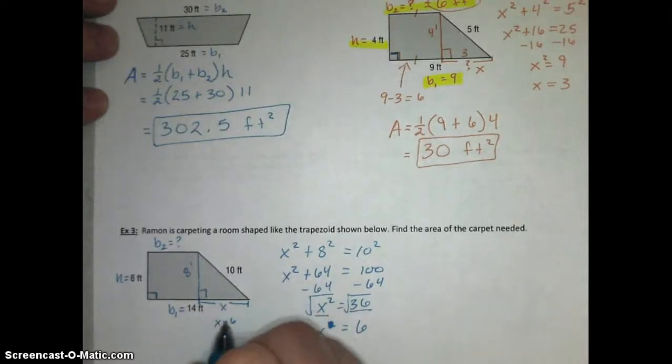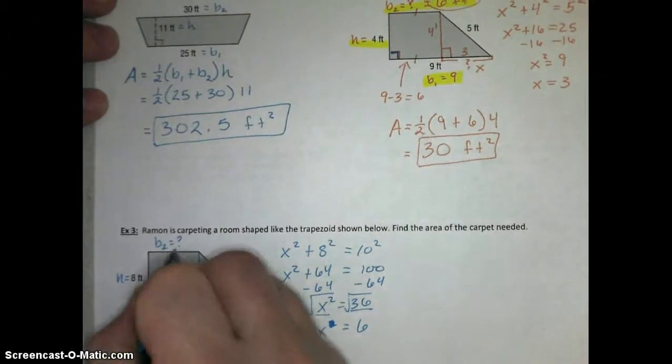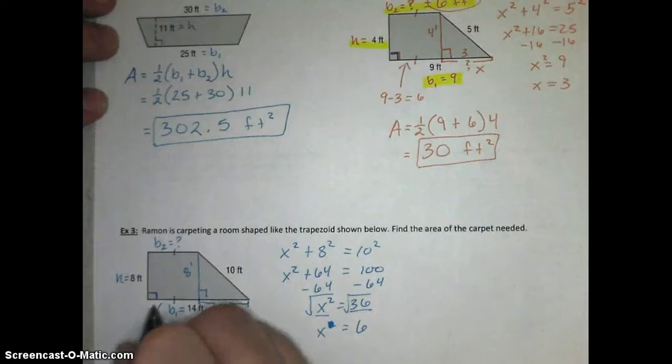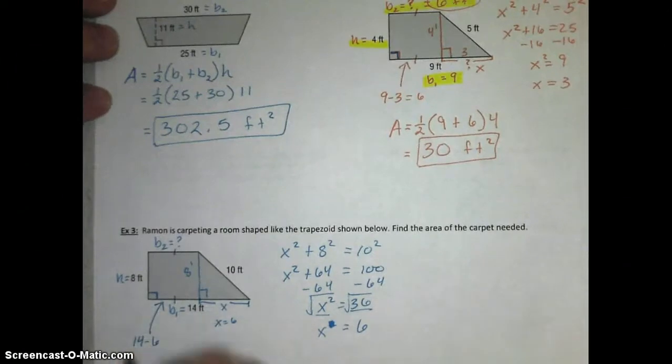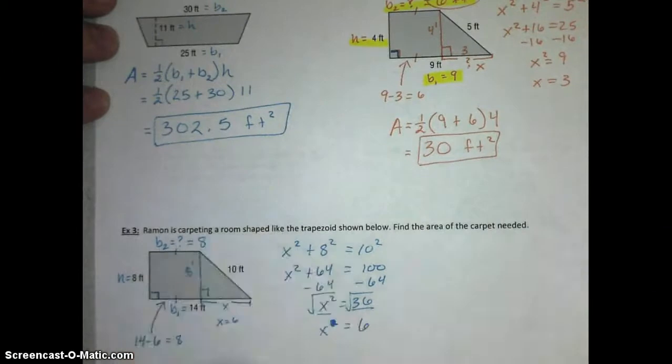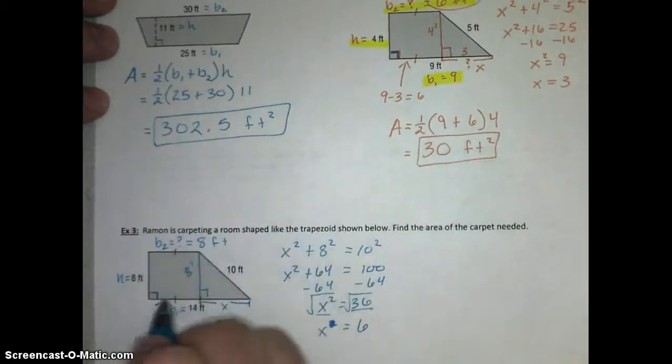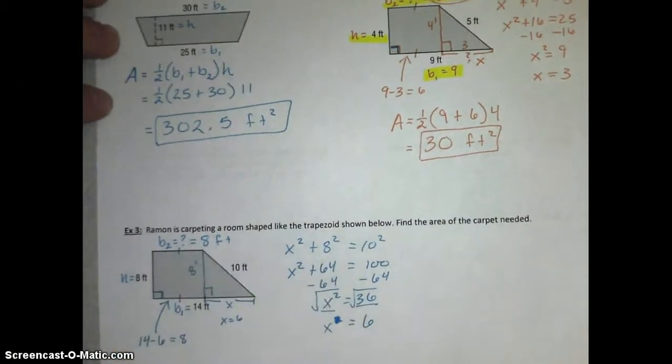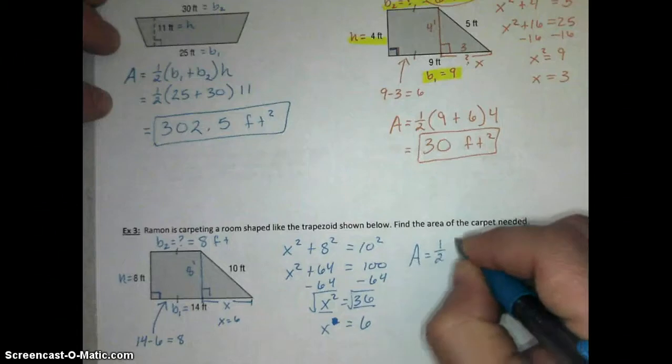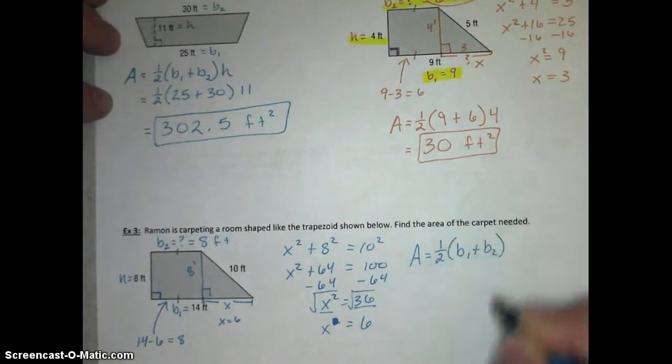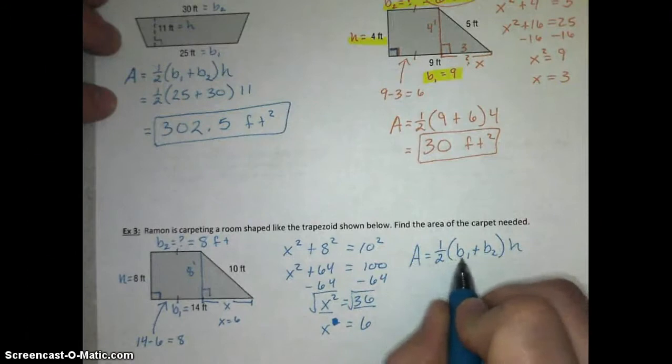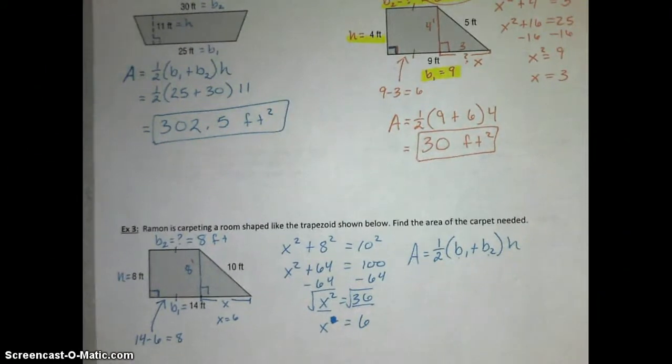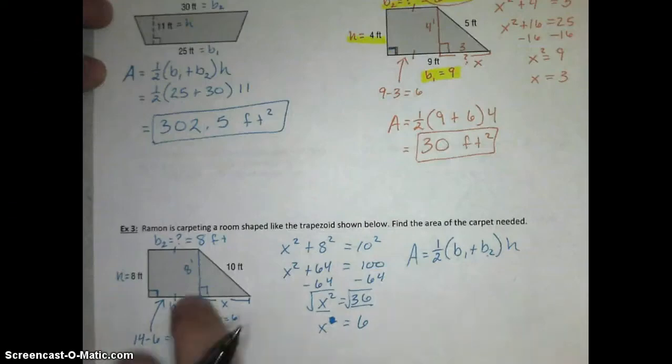Since x is 6, B2, or this part, remember these are congruent segments. So, that part is 14 minus 6, which is 8. So, base 2 equals 8 feet. That actually works out to be a perfect square this time, but we didn't know that until we worked this out. That is the part that we need to use to find our area. Remember, area equals 1 half, base 1 plus base 2, all times the height. I want you guys to plug in base 1, base 2, and height, and solve for the area.